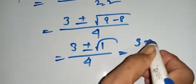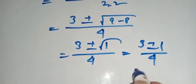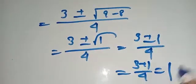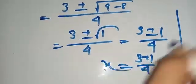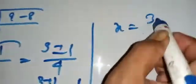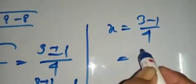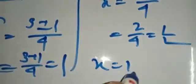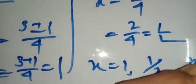That means, 3 plus minus 1 by 4. That means, 3 plus 1 by 4 equal to 1. And another x equal to 3 minus 1 by 4. That means, 2 by 4, equal to 1 by 2. That means, x equal to 1 and 1 by 2 answer.